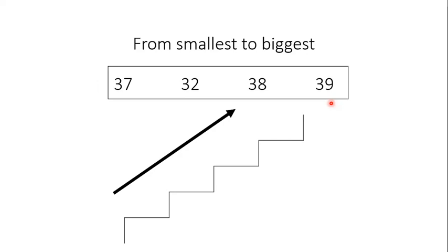See another example. Here you can see 4 numbers on your screen: 37, 32, 38, and 39. So if we see the first digit, it's the same in all the numbers — it's 3, 3, 3, 3. Now we will observe the second digit: it's 7 in 37, 2 in 32, 8 in 38, and 9 in 39. So now see all these four numbers: 7, 2, 8, and 9. Which number is the smallest? It's 2. So 32 is the smallest number.